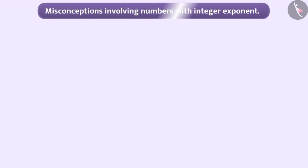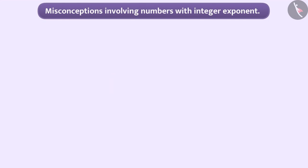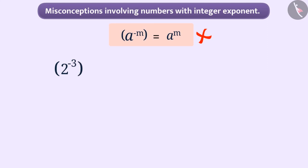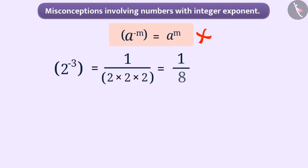Now let's see a simple mistake. Some children do not understand the importance of the negative sign in an exponent and ignore it, assuming that a to the power minus m can also be written as a to the power m. But this is a misunderstanding. To understand this, we will take the number 2 to the power minus 3. As you will know, 2 to the power minus 3 is equal to 1 upon 2 into 2 into 2, which equals 1 upon 8.